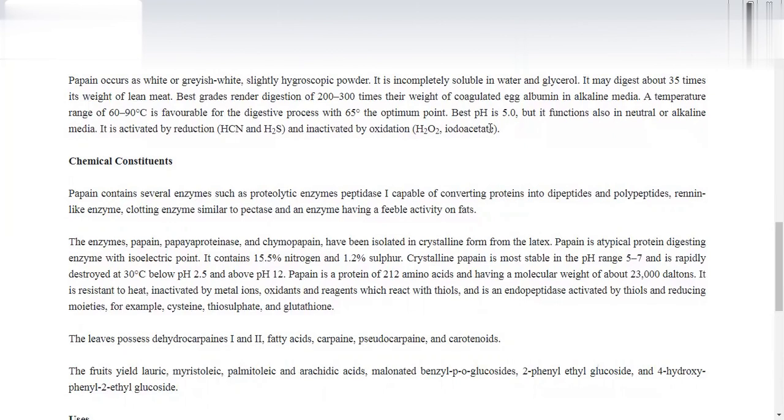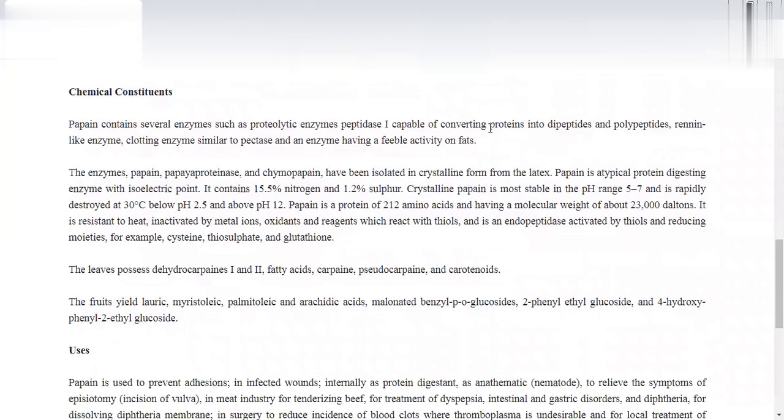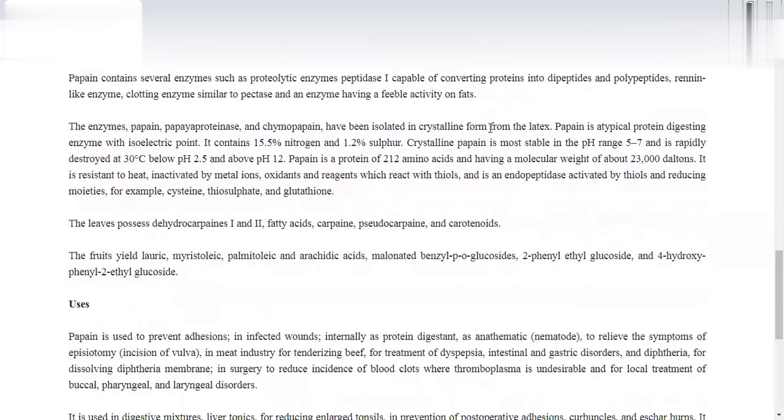The enzymes papain, papaya proteinase, and chymopapain have been isolated in crystalline form from the latex. Papain is a typical protein-digesting enzyme with isoelectric point at pH 8.75. It contains 15.5% nitrogen and 1.2% sulfur. Crystalline papain is most stable at pH between 5 to 7 and is rapidly destroyed at 90 degrees Celsius and below pH 2.5 or above pH 12.